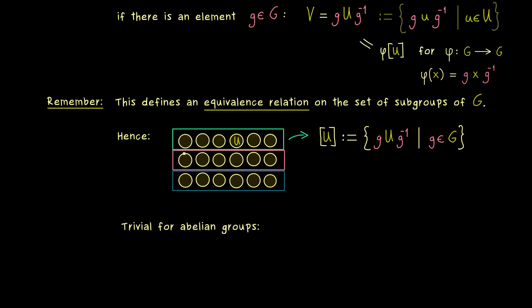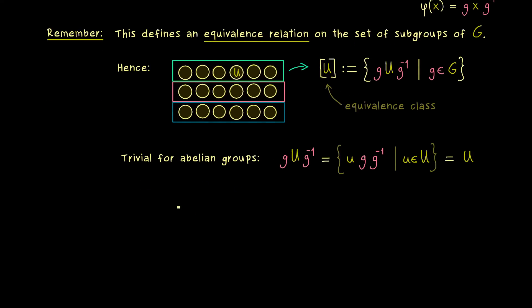In fact we immediately see that the whole thing is trivial if we consider an abelian group G. There the commutativity simply destroys this construction here. By using the set notation as simply to see, we can just exchange the order here in the middle and then we have g times g inverse, which is the identity element. Hence the only thing we get out here is U itself again. Therefore, for an abelian group, this equivalence class here only has one element, namely U. In other words, the nice term of conjugate subgroups does not help at all for abelian groups.